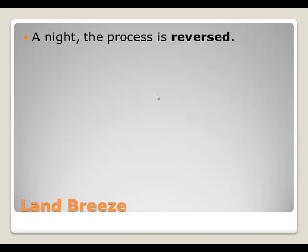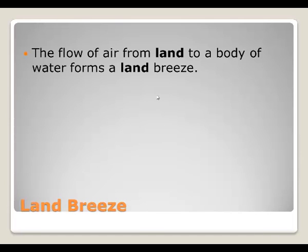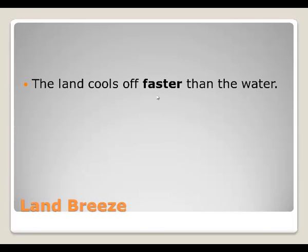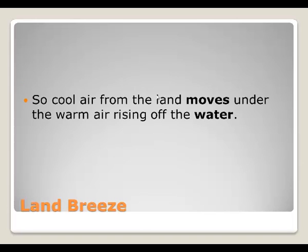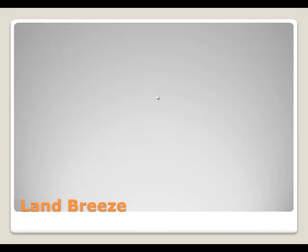A land breeze: at night, this process is reversed. The land cools off faster than the water — water retains heat overnight. So the air over the water is heated at night, becomes less dense, and rises, creating an area of low pressure. That area of low pressure allows the cooler air over the land to move in, so the air ends up moving from the land to the water.